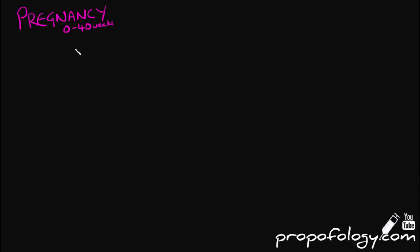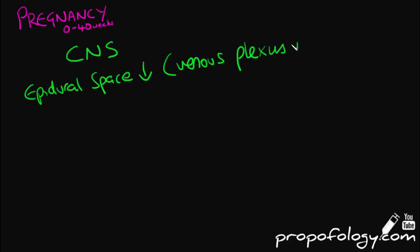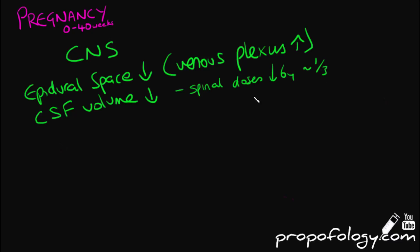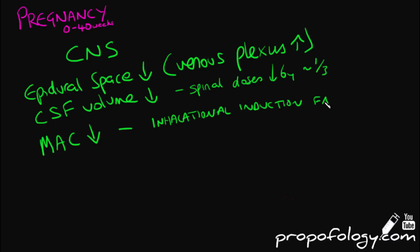Finally, let's look at the effects on the central nervous system. The epidural space reduces in size due to the engorged extradural venous plexus. CSF volume is also reduced, which is why we use reduced volumes of local anaesthetic agents during axial blockade. Importantly, pregnancy decreases the minimum alveolar concentration of gases required to achieve anaesthesia, meaning inhalational induction is faster — probably due to an increase in minute volume rather than cardiac output.